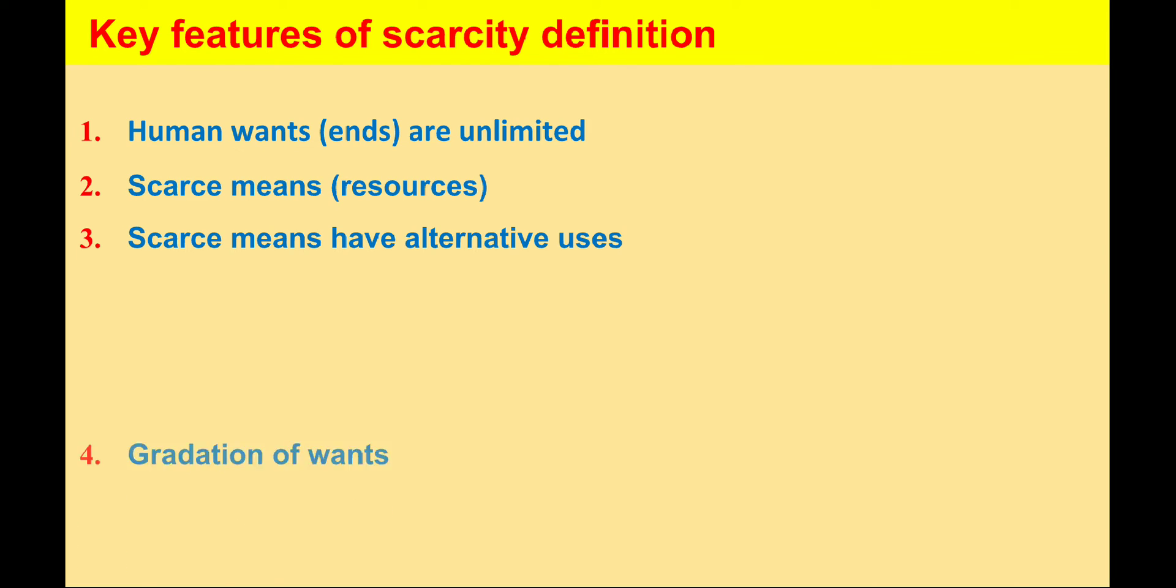Let us discuss another important feature of this definition: the gradation of wants. In fact, all of our wants are not equally important or urgent. Some are more important while some are less important. We satisfy the most urgent want and postpone the less urgent one. We can make the gradation of wants on the basis of urgency and importance. Let me recall the example of Sunil. Sunil's wants are purchasing of books, wristwatch, and uniform. All of his wants are not equally important for him. Each want is not as urgent as others because wants vary in intensity.